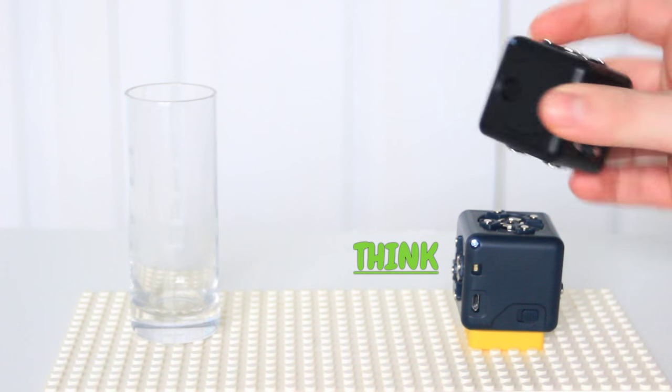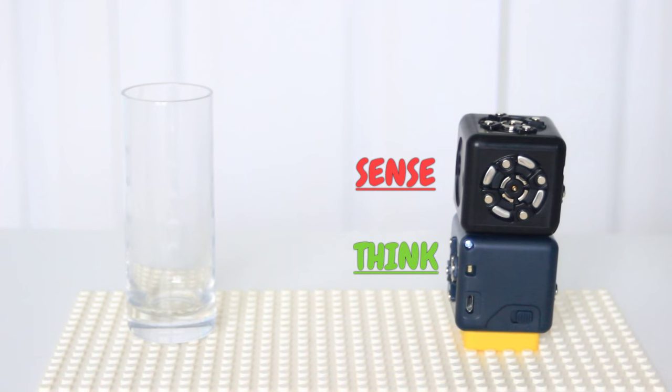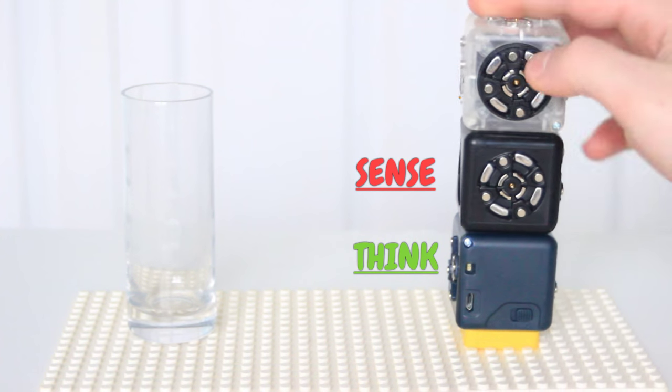Then we have a Sense Cubelet, which are the eyes of the whole machine, and then we have an Act Cubelet, which is a rotate piece.